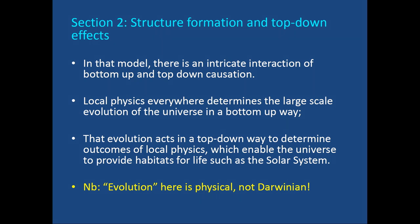Turning to structure formation and top-down effects: in these cosmological models there is an intricate interaction of bottom-up and top-down causation. Local physics everywhere determines the large-scale evolution of the universe in a bottom-up way, but that evolution then acts down in a top-down way to determine the outcomes of local physics — enabling the universe to provide habitats for life such as the solar system. Note that 'evolution' here means physical evolution, not Darwinian evolution.